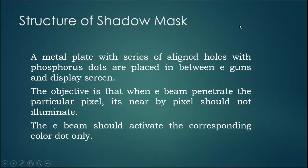Structure of shadow mask. A metal plate with series of aligned holes with phosphorous dots are placed in between electron guns and display screen. The objective is that electron beam will be more sharper and aligned and it will penetrate corresponding colored dot only and also to avoid nearer pixel to illuminate partially.